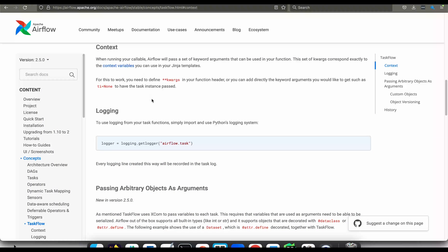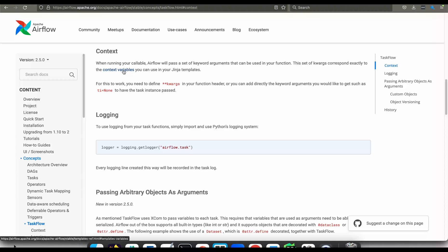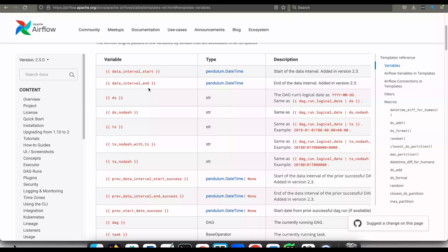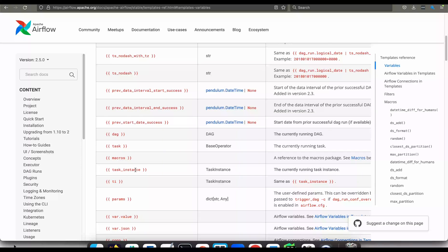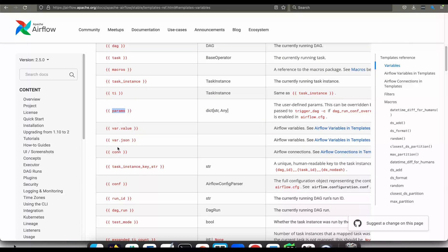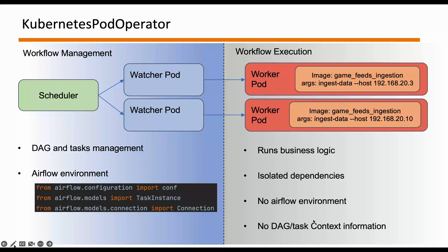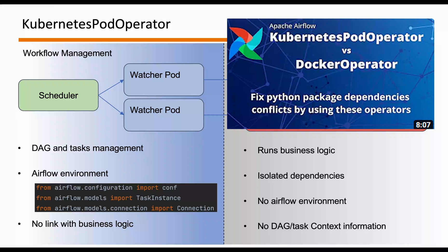Another difference between workflow management and workflow execution: in workflow management, you have visibility of the Airflow environment — you can access Airflow configurations, details of the running task instance, and connections defined in your Airflow environment. Whereas in workflow execution, you have no information about the Airflow environment at all. From the image — say the game feeds ingestion image — you have no information about the DAG or task context like execution date and time. The Airflow context contains loads of information: DAG run logical date in different formats, task instance details, DAG parameters, Airflow configurations, and more. None of that is available inside the worker pod.